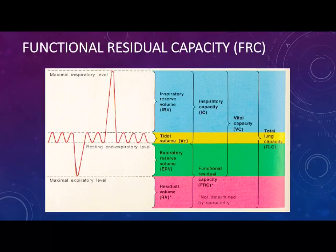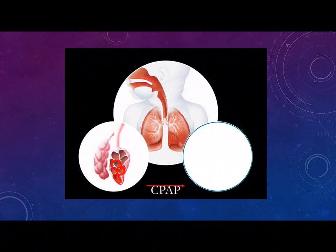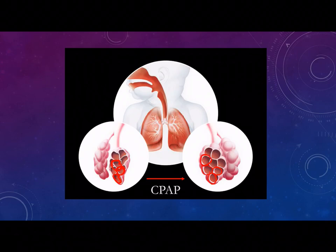What is the functional residual capacity? FRC is the cornerstone of CPAP action. FRC is the volume of air inside the alveoli after expiration — it is the sum of residual volume plus the expiratory reserve volume. In preterm babies, the alveoli have a tendency to collapse, especially at the end of expiration, so the alveolar volume is small. If you apply CPAP, it will distend and recruit the alveoli, creating a higher surface area for gas exchange.